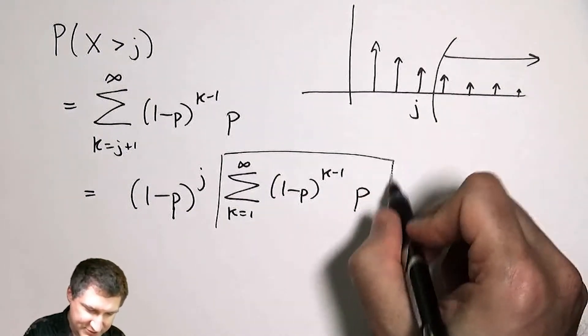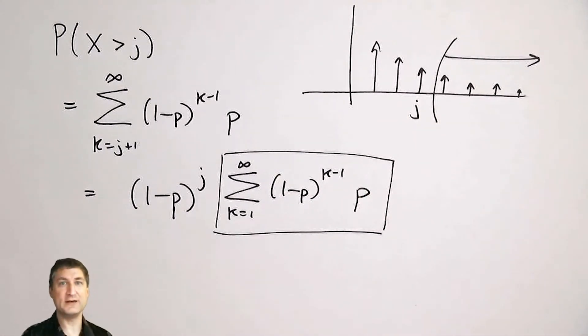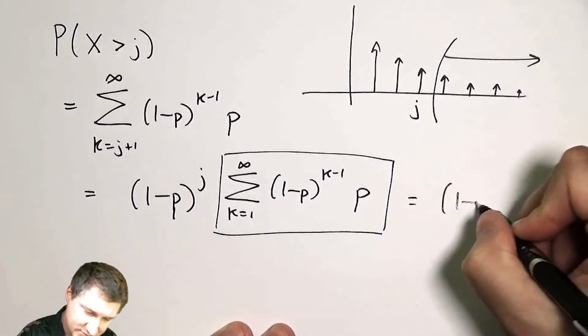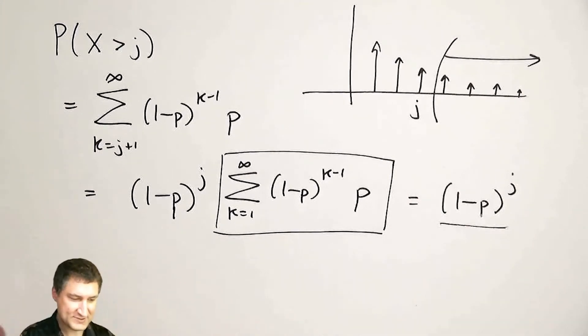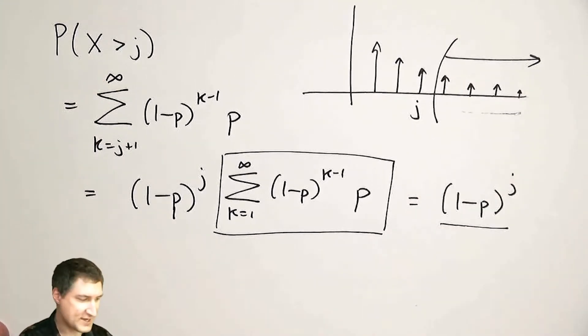And then I say, well look, this is actually just the sum of all of the values of the PMF, which I know has to be one, right? Because I have to have PMFs that sum to one.